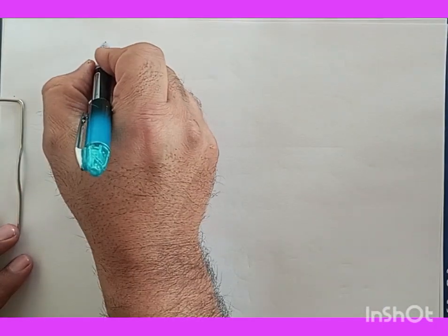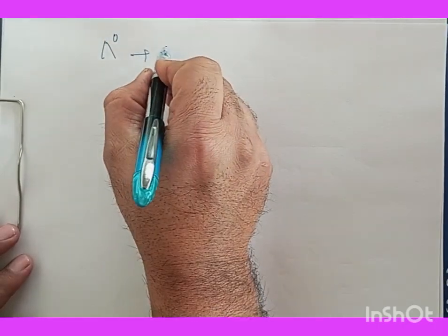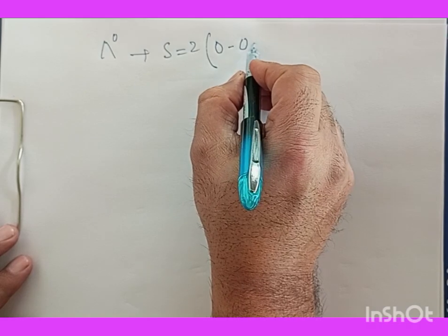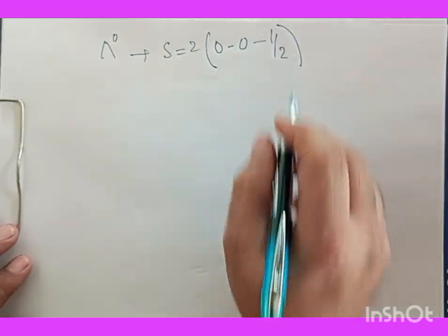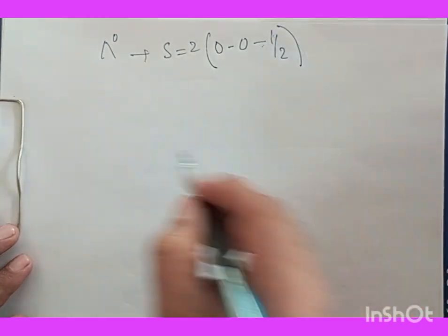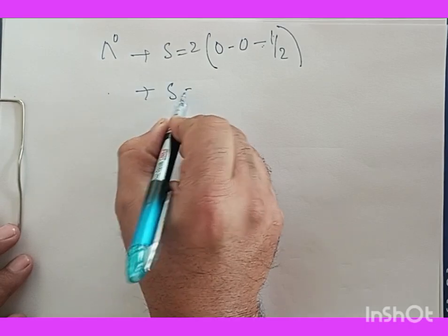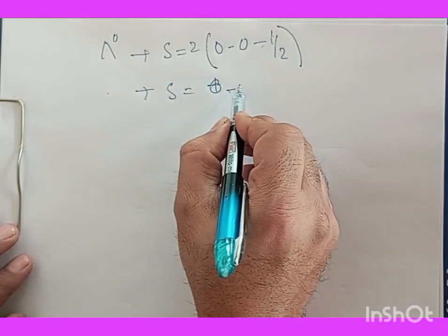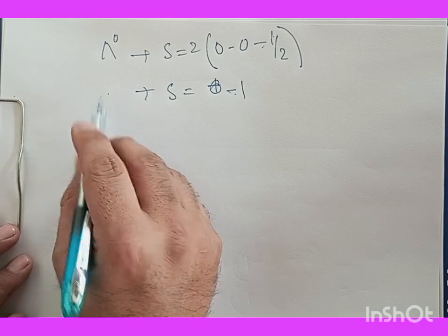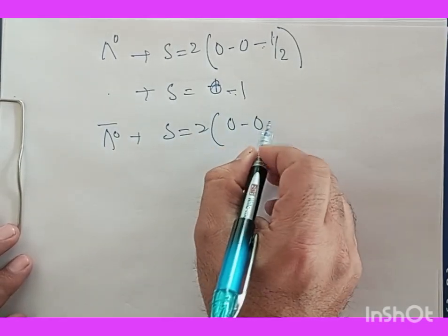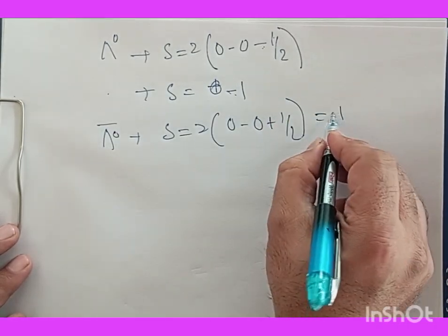We can take another example: Lambda-neutral. For this particle, strangeness = 2(0) − 2(0) − 2(½) = −1, using B = 1. And for the antiparticle of Lambda, the strangeness = 2(0) − 2(0) + 2(½) = +1, using B = −1.